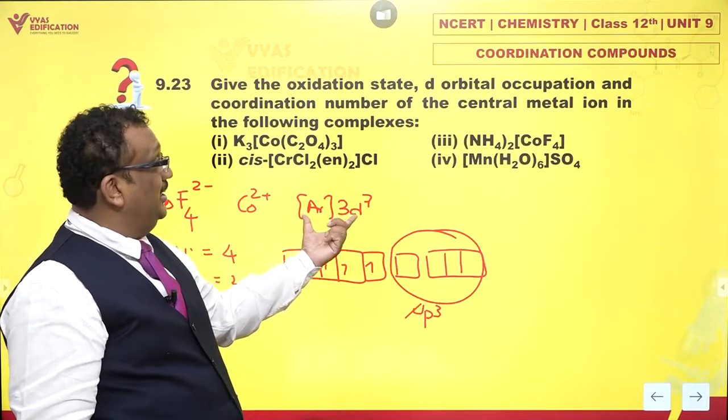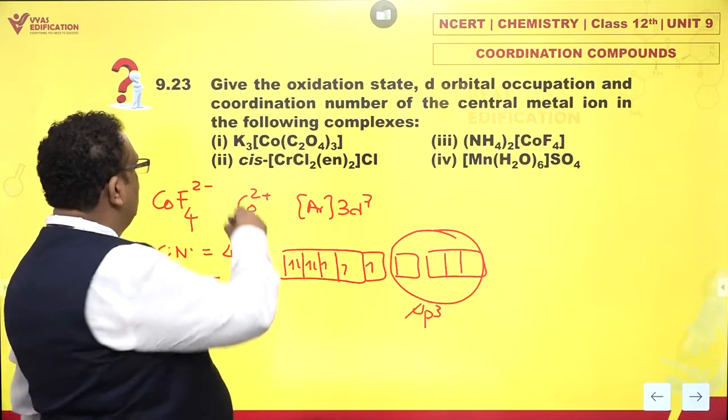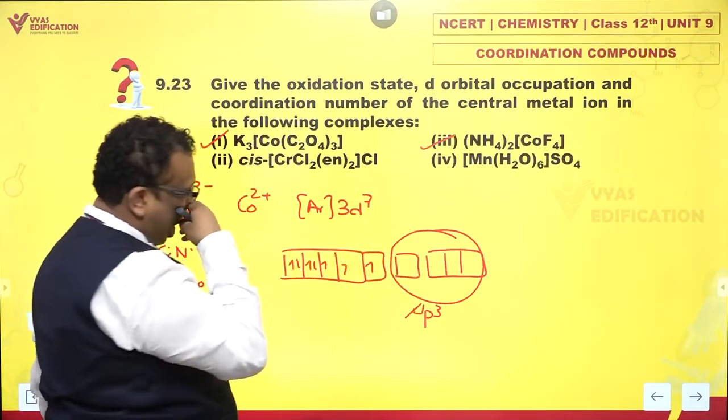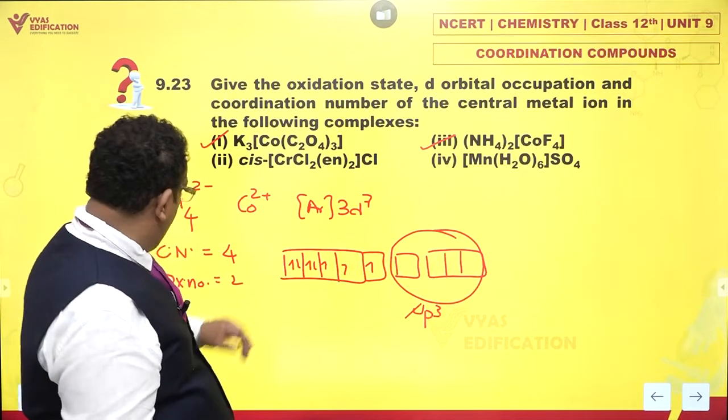This is the D orbital occupation diagram also, which I am giving you. So, 1 was done in the previous question, 2 or 3, whatever the number is, we have done this. Let's take a look at the next two parts.